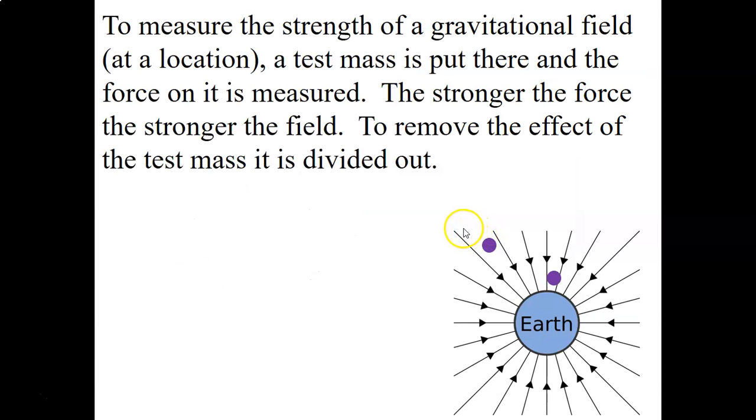And so to measure the gravitational field strength at a given location, what you do is you put a test mass in that gravitational field, and you measure the force acting on it. And then you move it around if you want to test the field at another location. Now we want to get rid of the thing that we're measuring. We don't want it to impact the gravitational field strength, so we're going to divide out by the mass of our test mass. We're only looking to find the field strength due to the central planet, in this case, the Earth.